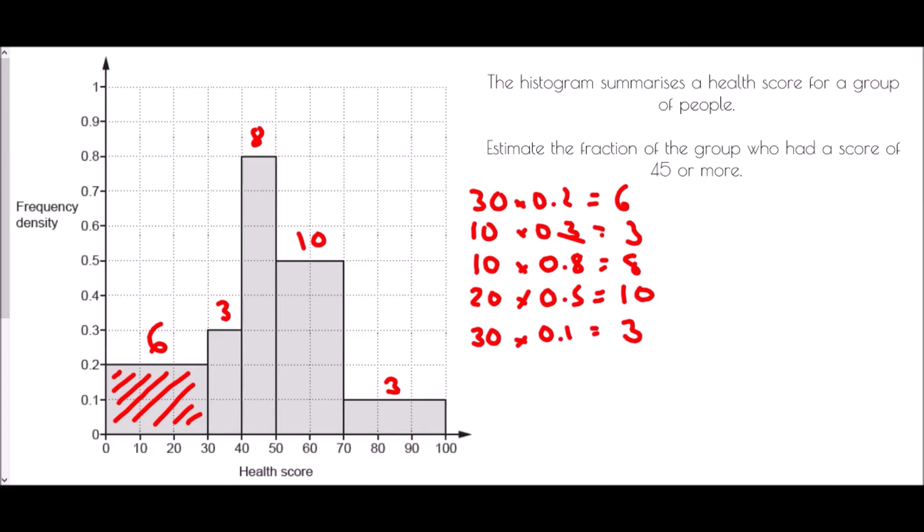And the final group has a width of 30 and a height of 0.1 meaning we have 3 people. Now what we can tell from this is the total number of people who were involved in that survey.